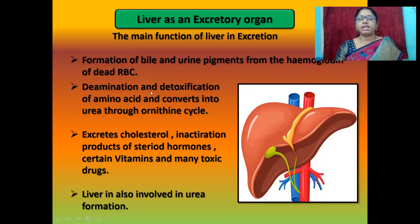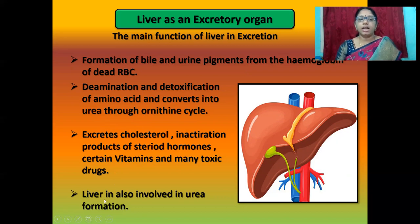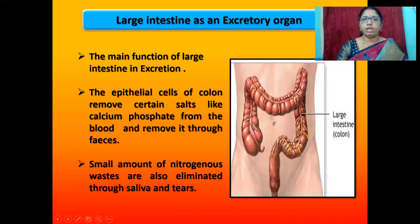The next accessory excretory organ is the liver. The main functions of the liver in excretion include: formation of bile and urine pigments from the hemoglobin of dead red blood cells; deamination and detoxification of amino acids, converting them into urea through the ornithine cycle; and excretion of cholesterol, excretion products of steroid hormones, certain vitamins and many toxic drugs. The liver is also involved in urea formation.